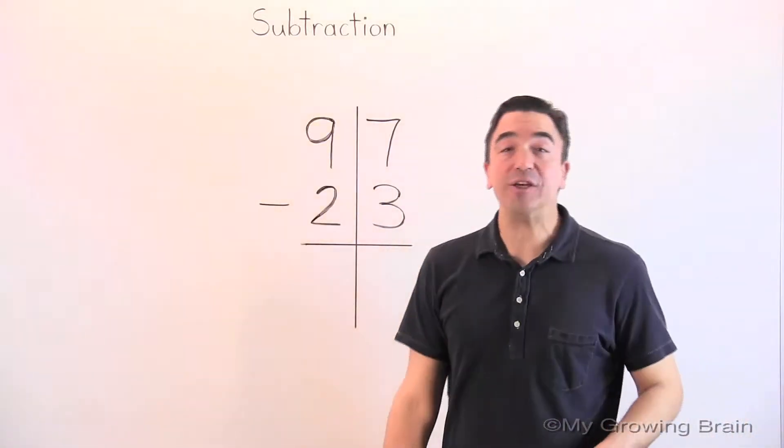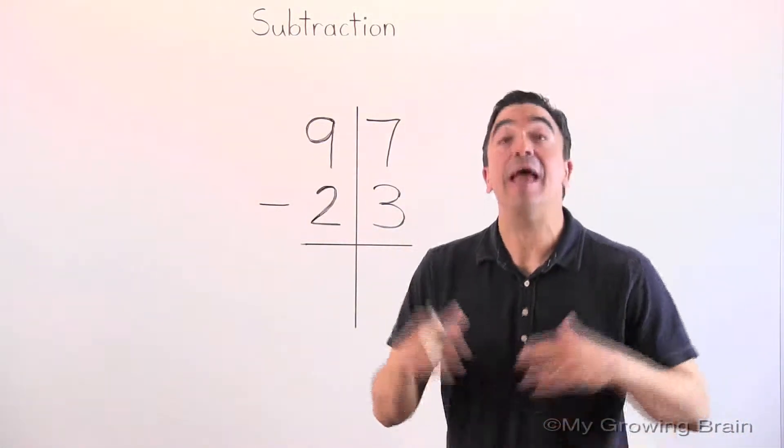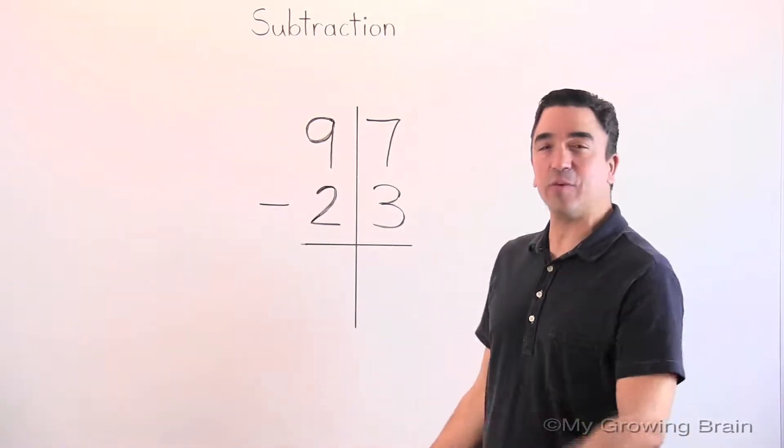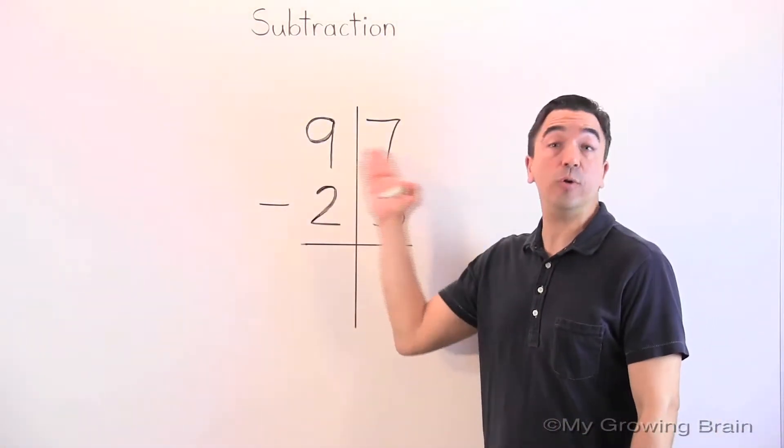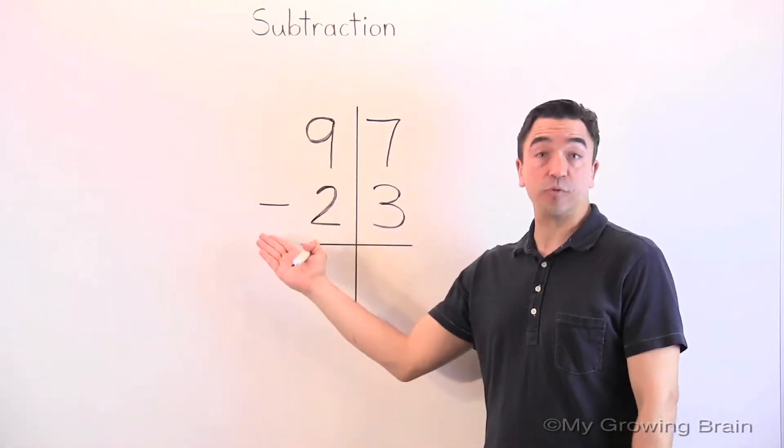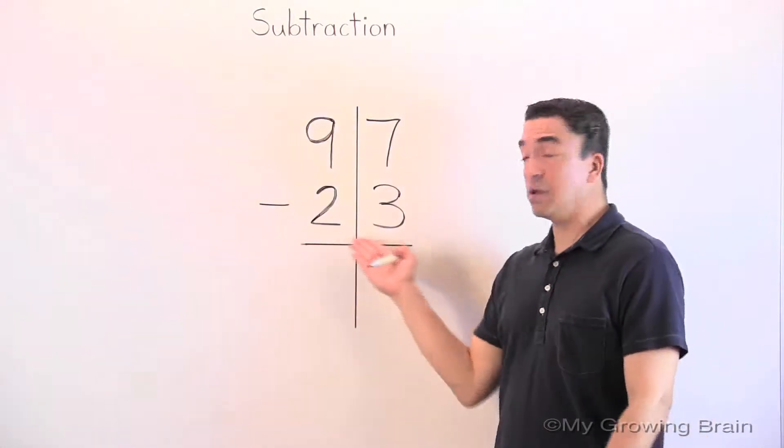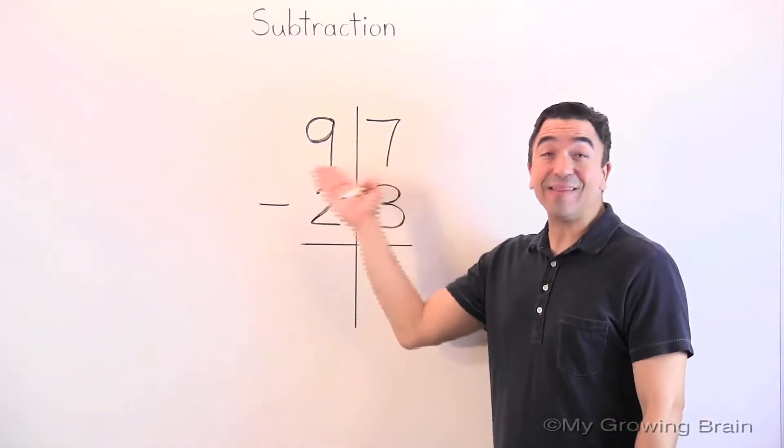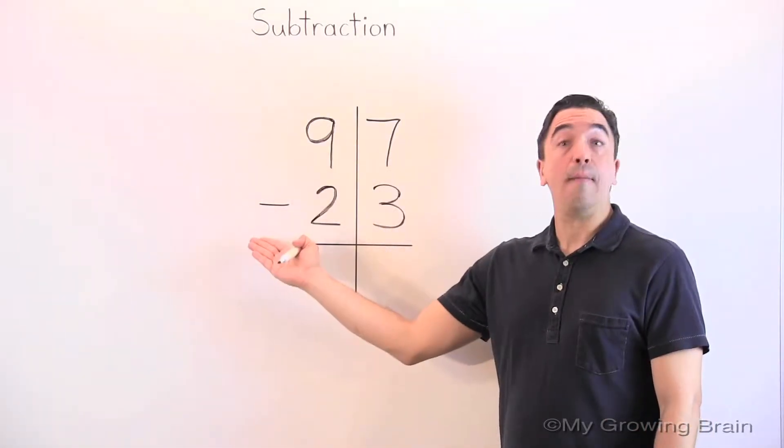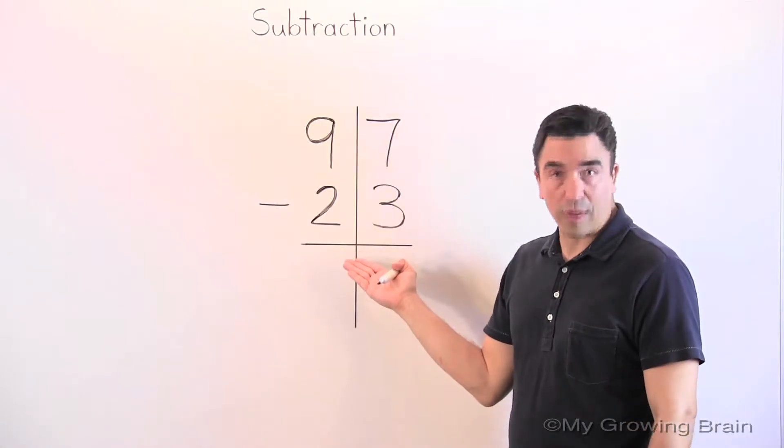Today's lesson is on subtraction. I love subtraction. It's so much fun. Let's get to work. Here's our problem. A two-digit number, subtract, or minus a two-digit number. 97 minus 23.